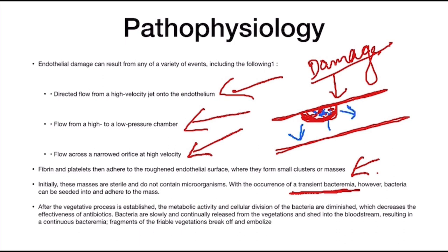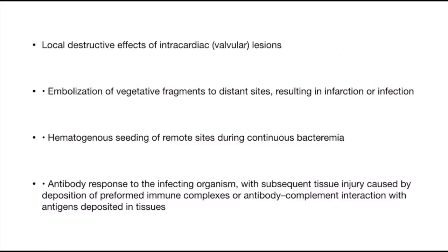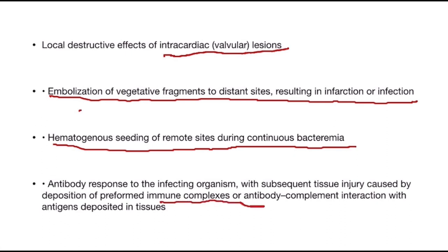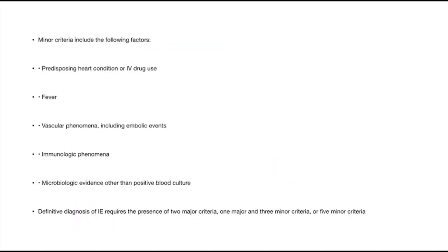Once the vegetative process is established, the metabolic and cellular division of bacteria are diminished, decreasing the effectiveness of antibiotics. Bacteria are slowly and continuously released into the bloodstream, resulting in continuous bacteremia. Fragments of these friable vegetations break off and embolize. Host immune responses occur, including local destructive effects of intracardiac or valvular lesions, embolization of vegetative fragments to distant sites causing infarction, hematogenous seeding of remote sites, and antibody responses causing tissue injury. The most common complication of infective endocarditis and leading cause of death is heart failure.